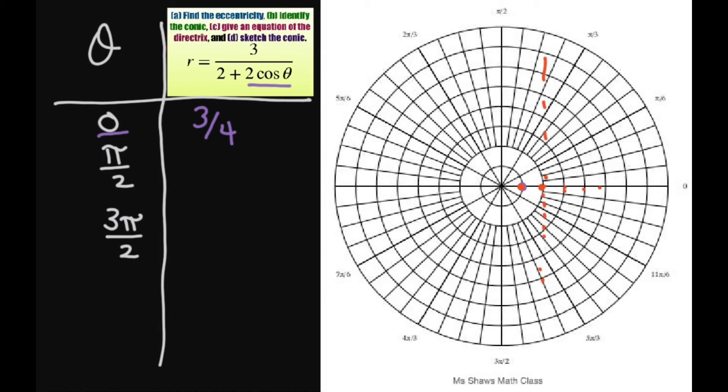X equals 3 halves. This point here is 3 fourths comma 0 in polar form.